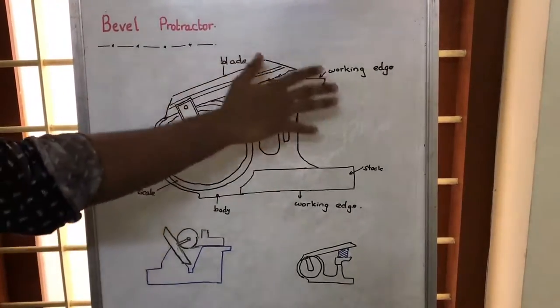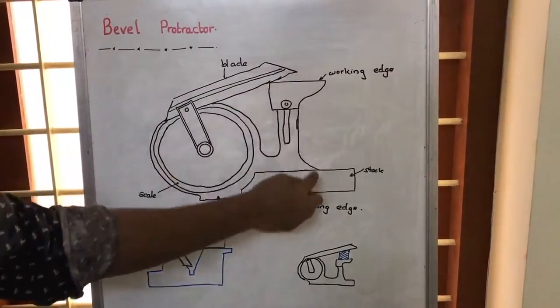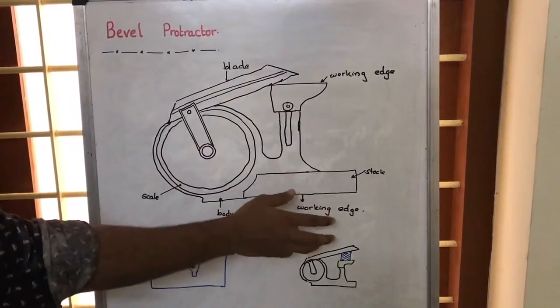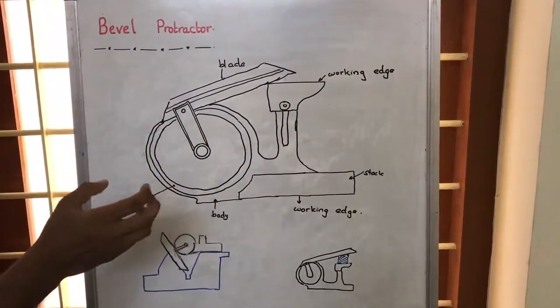Since this is a bevel protractor, there are two working edges. These are the working edges, and there is a reason for calling them that, which we will explain later.